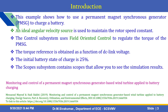This example shows how to use a permanent magnet synchronous generator to charge a battery. Some subsystem and source blocks are used for this design. An ideal angular velocity source is used to maintain the rotor speed constant. The control subsystem uses field-oriented control to regulate the torque of the PMSG, and the torque reference is obtained as a function of DC link voltage. The initial battery state of charge is 25%.